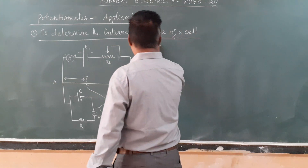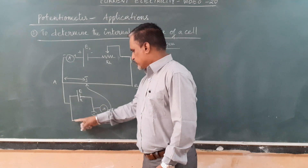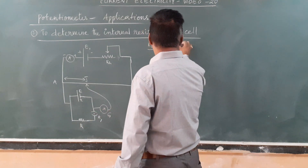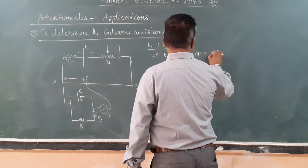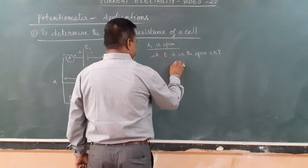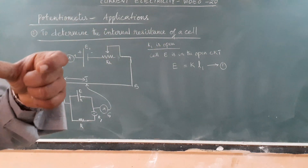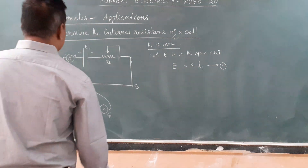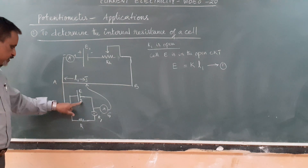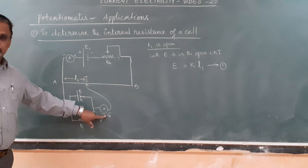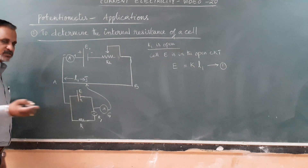First, we open the key K1. When K1 is open, no current flows through the secondary circuit — the cell E is in open circuit. According to the principle of the potentiometer, we measure the balance length, which is equal to L1. The EMF of the cell is balanced against length L1. There is no drop across the internal resistance because the galvanometer shows null deflection, meaning zero current flows through it.